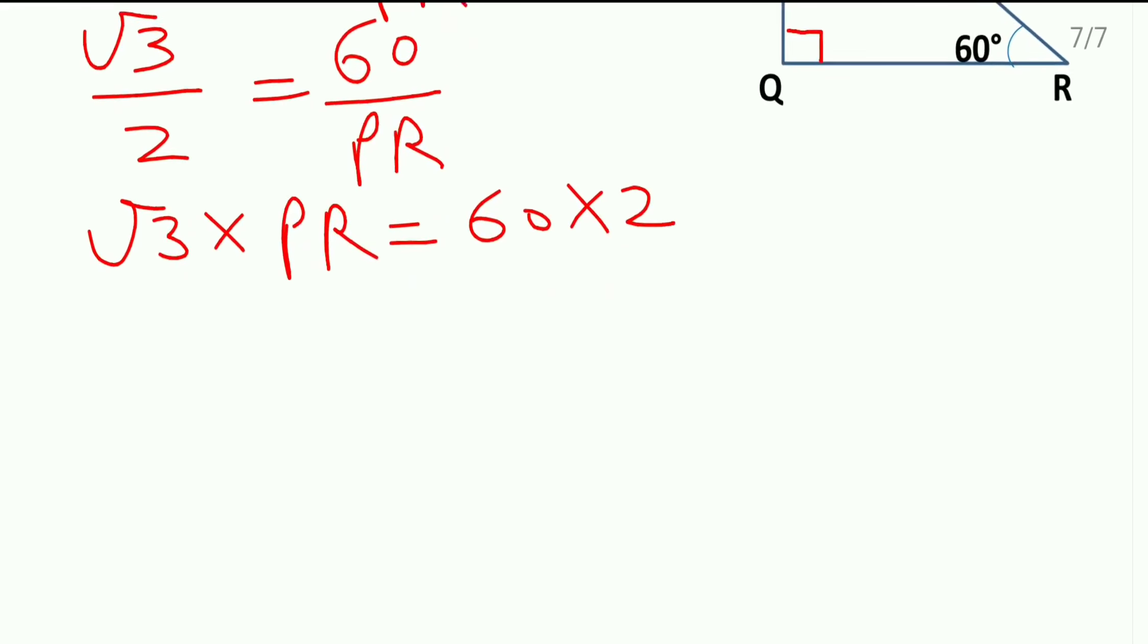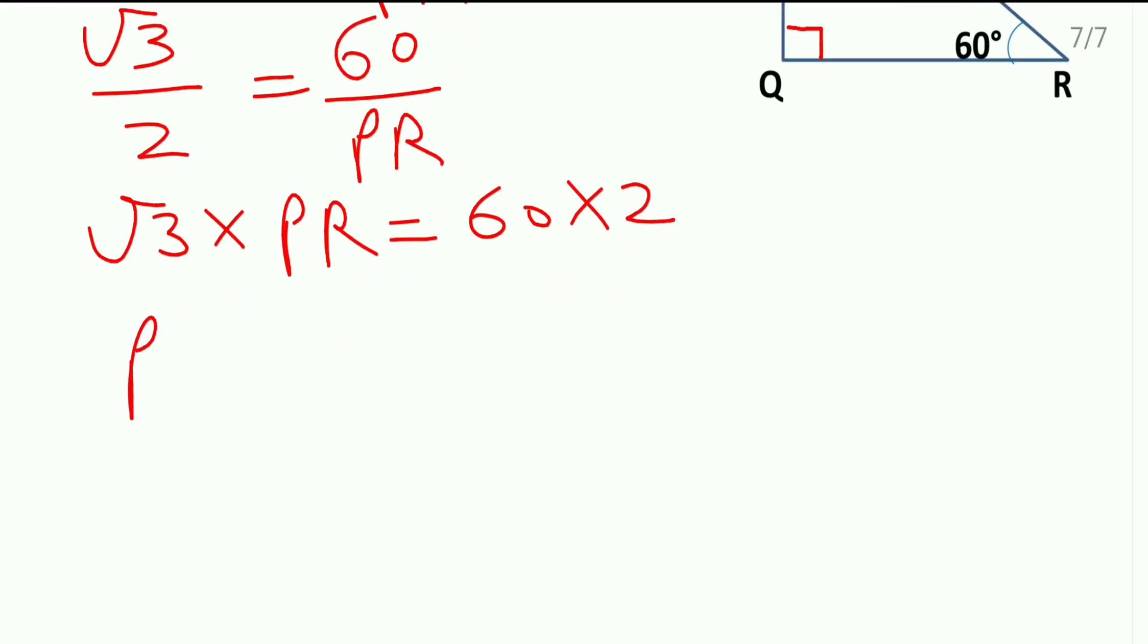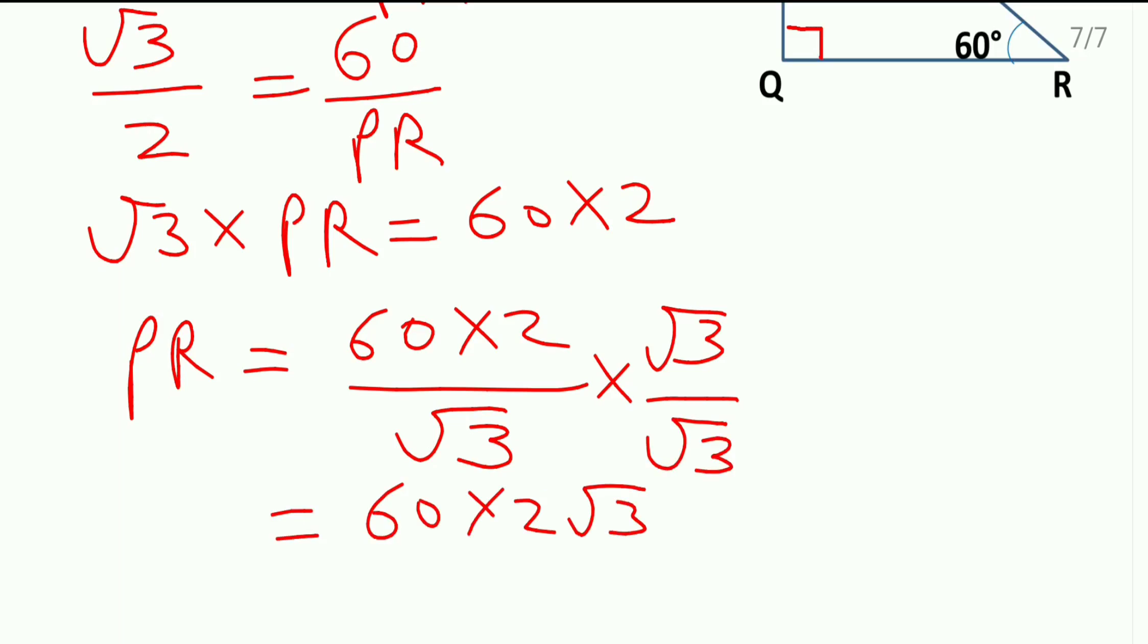So this PR will be as it is here. PR which is equal to 60 into 2 by root 3. We have to rationalize the denominator. To rationalize it, just multiply and divide the number by root 3. Here, so 60 into 2 root 3 divided by this root 3 into root 3 will become root 9 and the square root of 9 is 3.